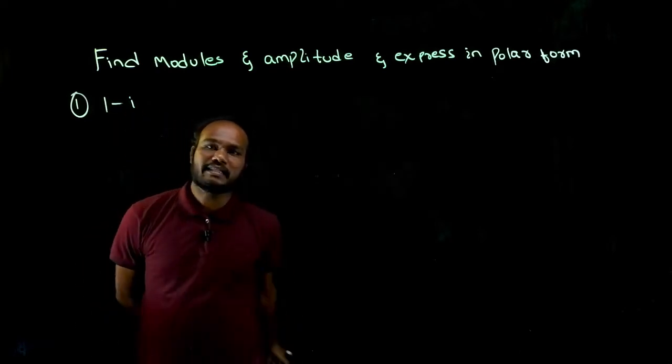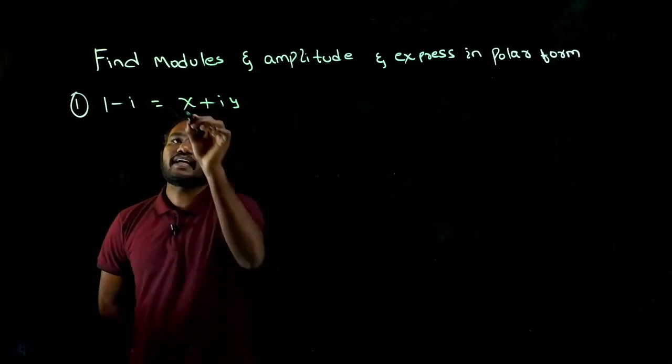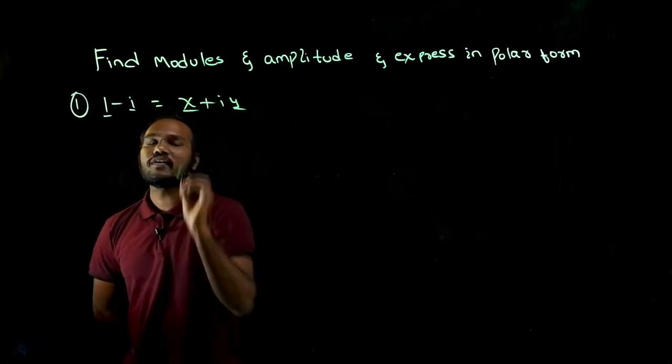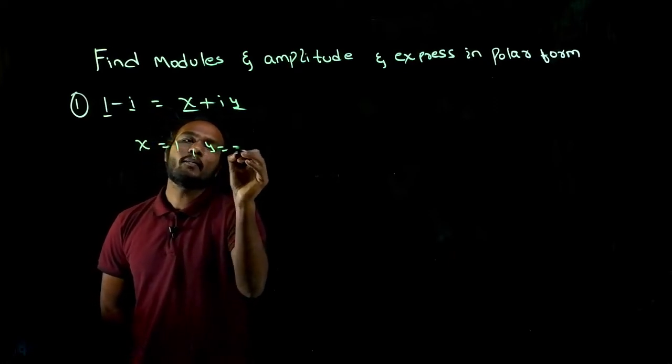What is given? 1-i is given. We have to compare this with x+iy. So x is this number, y is the coefficient of i. What is x value? One. What is y value? Minus one.